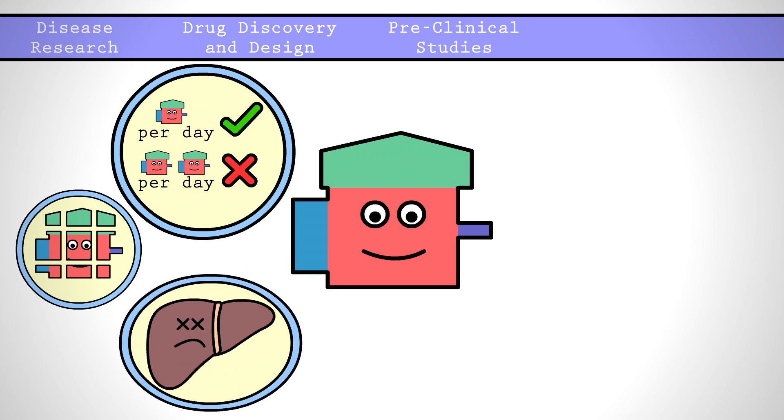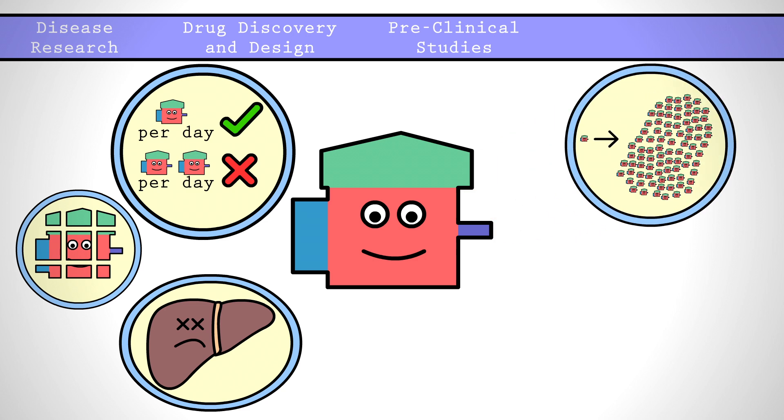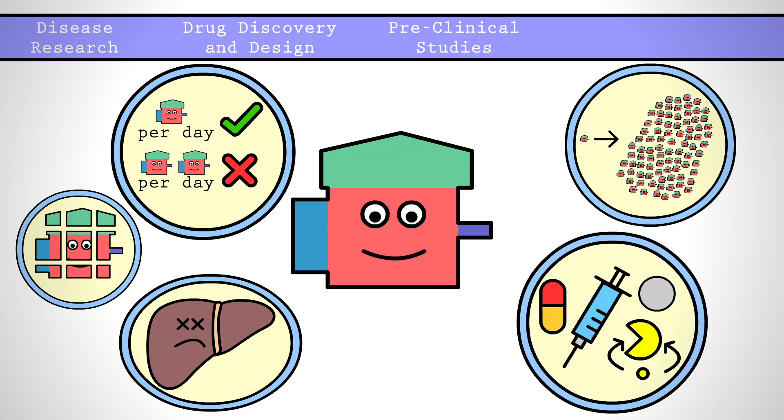Additionally, we need to screen for any major organ system toxicities. From a chemistry standpoint, we also need to determine the stability and solubility of the compound to scale up the manufacturing from a few milligrams to kilograms, and to find the best way to deliver the drug to humans.